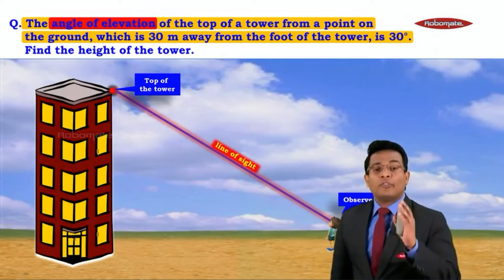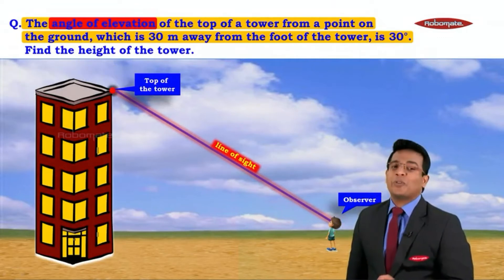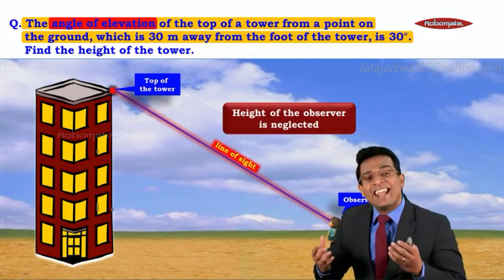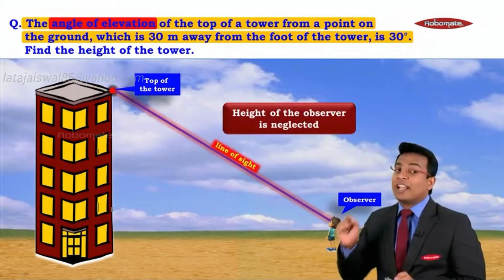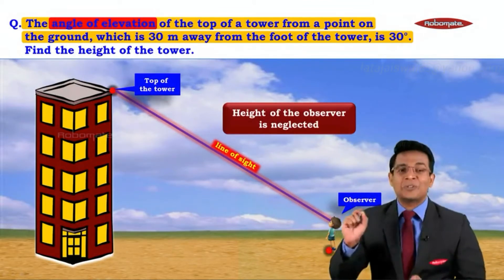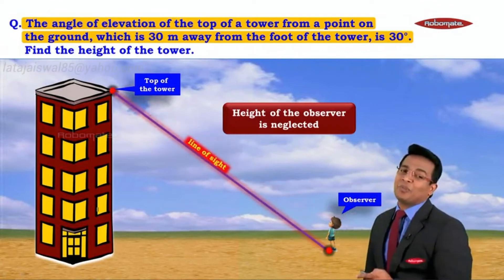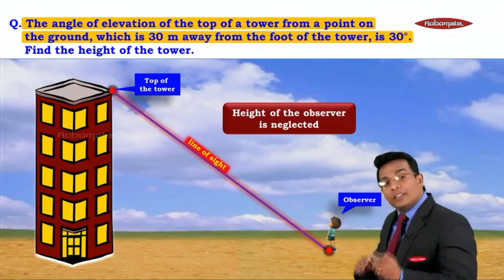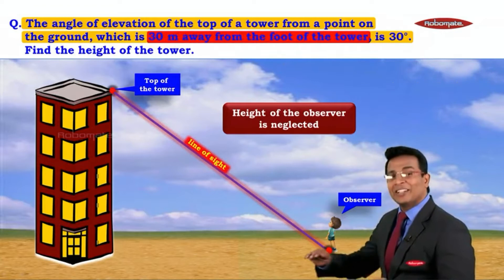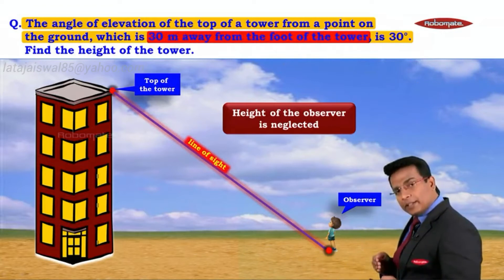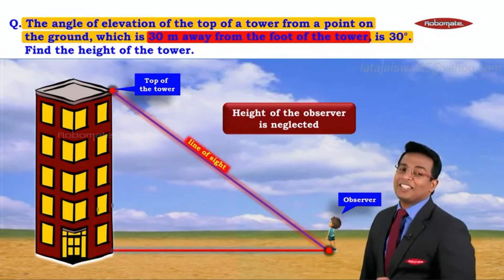Whenever we have an observer there has to be a horizontal line, but first check: do we have the height of the observer given? No. That means the height of the observer is neglected. In that case, we take the observer as a point on the ground. The line of sight comes from that point, and the ground itself is the horizontal line. The person is 30 meters away from the foot of the tower.